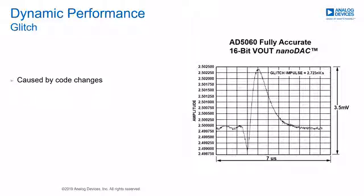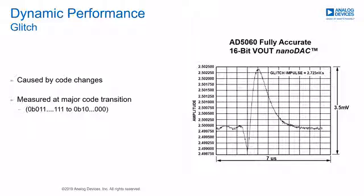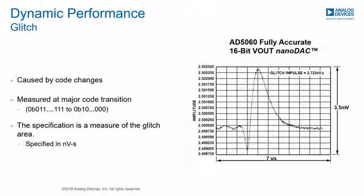Glitch is a transient response observed on the output when transitioning from one code to another. The maximum glitch typically occurs during a major code transition, from 0111...1 to 1000...0 or vice versa. This is because this code transition causes all internal switches to change state. Characterization data is now gathered on all successive code transitions for our DACs. Glitch is specified in nanovolt-seconds, which is the area of the transient response. In the case of the AD5060 nanoDAC, this is specified as being less than 3 nanovolt-seconds. The peak-to-peak amplitude is also specified, in this case being less than 3.5 millivolts.